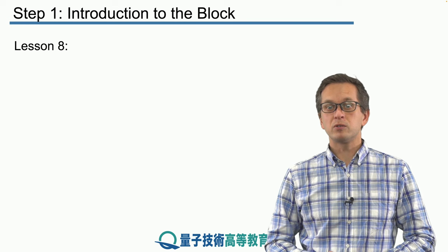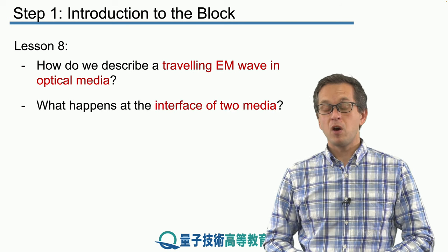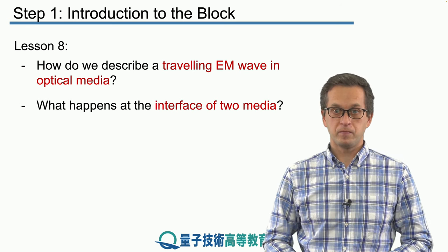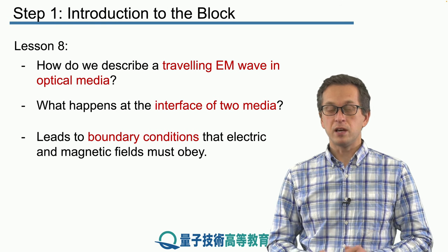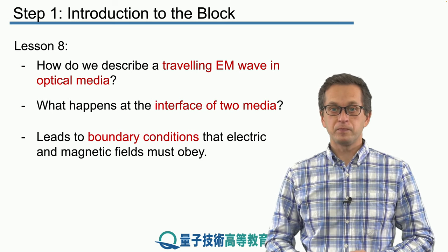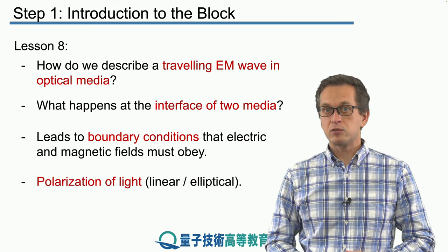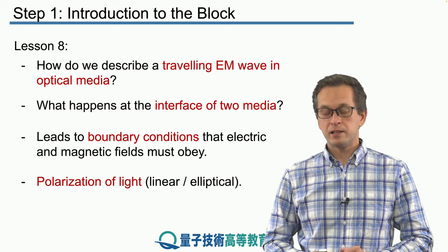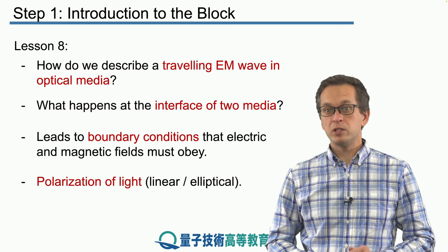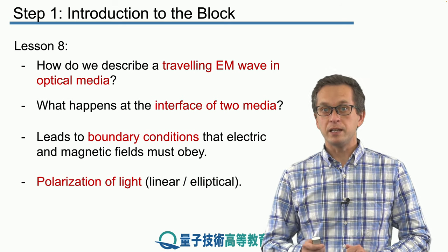In the current lesson, we are going to consider how electromagnetic waves propagate in optical media. We will also ask what happens at the interface of such media, and what is the description of this behavior in terms of wave optics. That will lead us to four boundary conditions that all electric and magnetic fields must obey when the electromagnetic wave is traveling from one medium into the other. At the end of the lesson, this will naturally lead us to polarization of light. So far we have implicitly considered linear polarization, but we will cover other types, leading to a beautiful description of general polarization in terms of elliptical polarization.